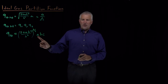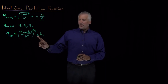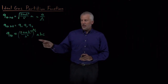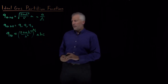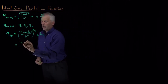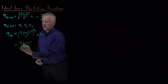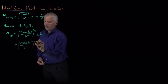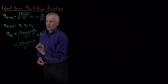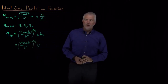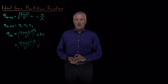We can simplify further by noticing that the length times the width times the height of the box — the x, y, z dimensions — is just the volume of the box. So we can rewrite the partition function as (2πmkT/h²) to the three-halves times the volume of the box that the three-dimensional particle is confined to.